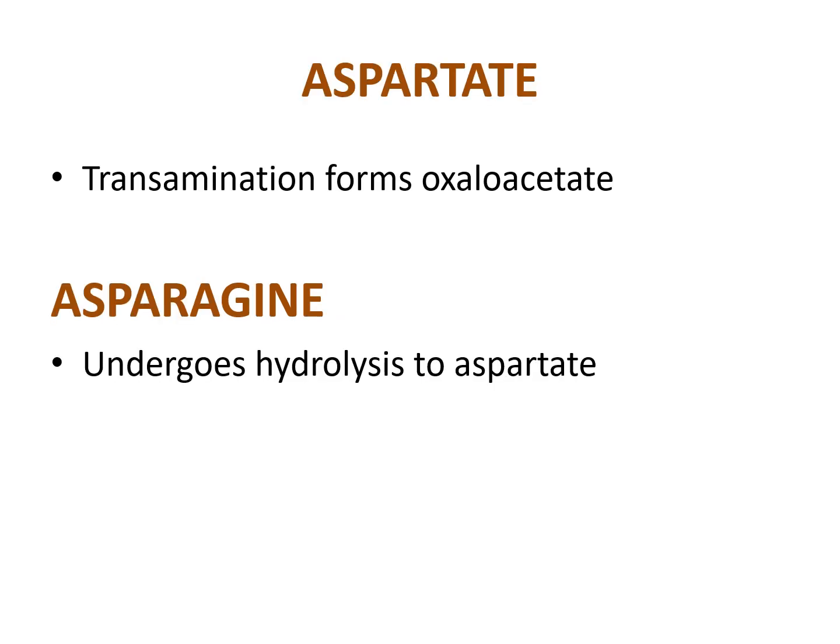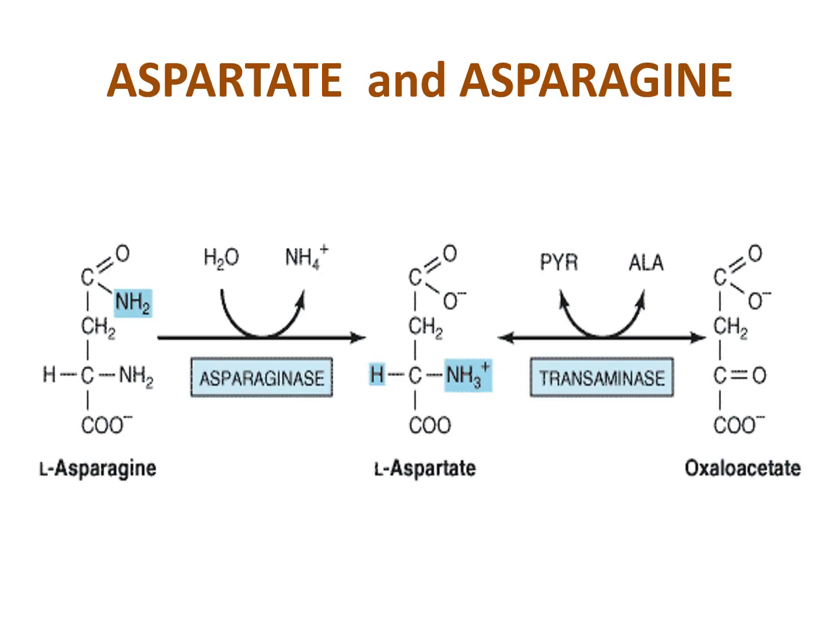For oxaloacetate, the carbon skeletons come from aspartate, which is a transaminated form. Asparagine undergoes hydrolysis to aspartate, which is then transaminated to form oxaloacetate.